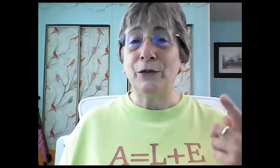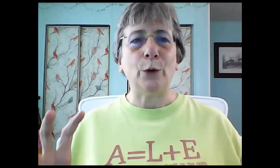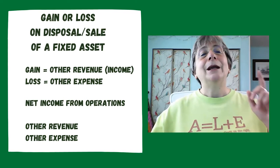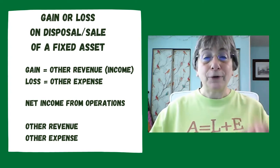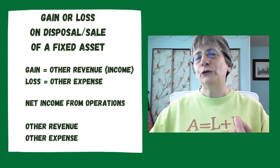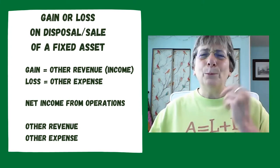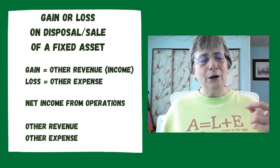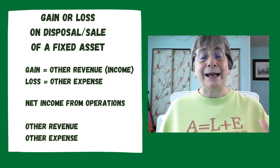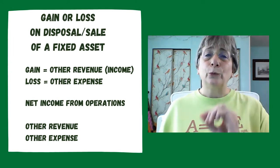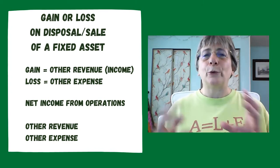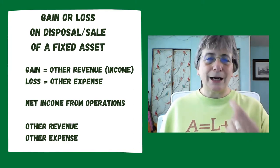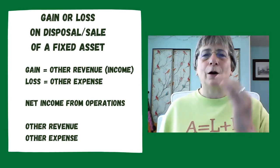We start off today with some new accounts — and I should have a new account siren alert, that would be really cool. Terrence, make a note of that. New account number one: gain on sale of an asset. You might also hear this called gain on sale of a fixed asset or gain on disposal of an asset. Different companies will call it different things, but it will be something close to that title.